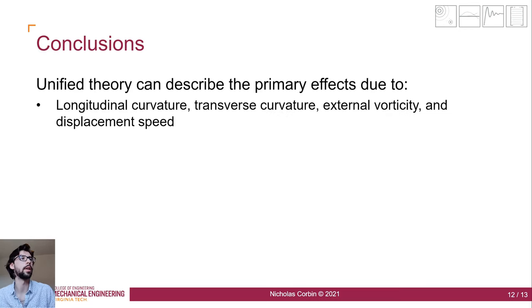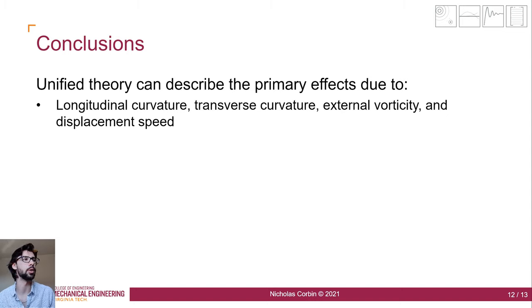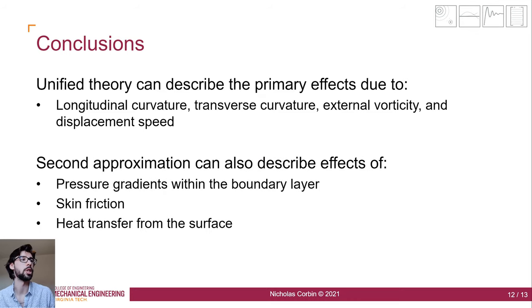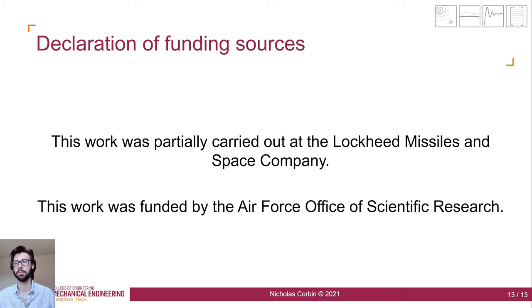In conclusion, the unified theory presented today is able to, in a unified manner, describe primary effects such as longitudinal curvature, transverse curvature, external vorticity, and displacement speed. And while I didn't have time to discuss in the presentation, if you look in the manuscript at second-order approximations, we're also able to describe effects such as pressure gradients within the boundary layer, skin friction, and heat transfer from the surface — all caused by things like longitudinal curvature, transverse curvature, and the other effects mentioned earlier. Thank you for your time. Funding sources include the Lockheed Missile and Space Company and the Air Force Office of Scientific Research.